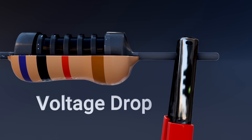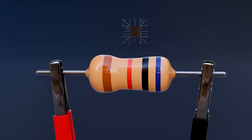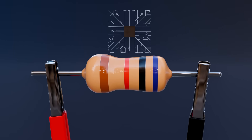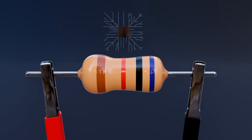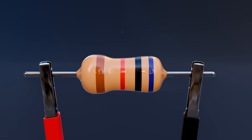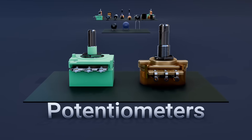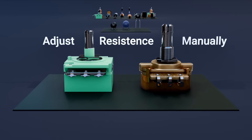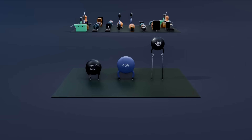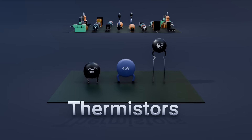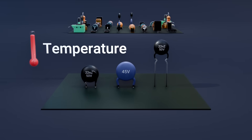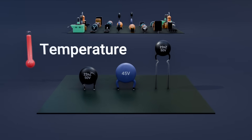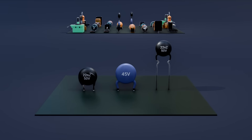This voltage drop is key for controlling voltages in sensitive components like microchips. There's a resistor for every application. Fixed resistors provide a constant resistance. Variable resistors, like potentiometers, allow you to adjust the resistance manually. Specialized resistors, such as thermistors, change resistance with temperature, making them useful in sensing applications.